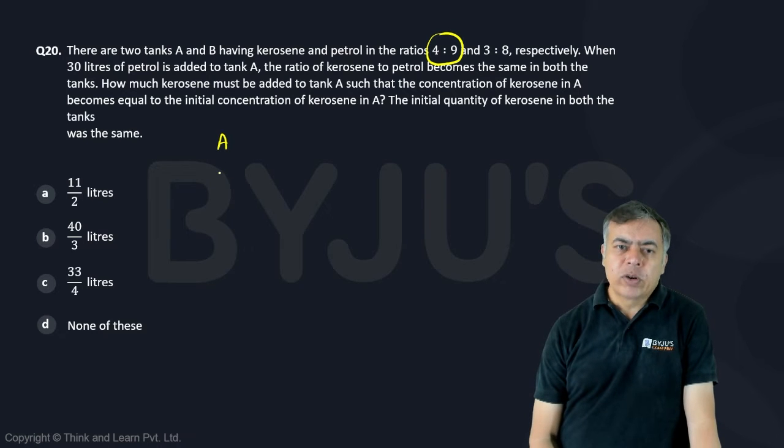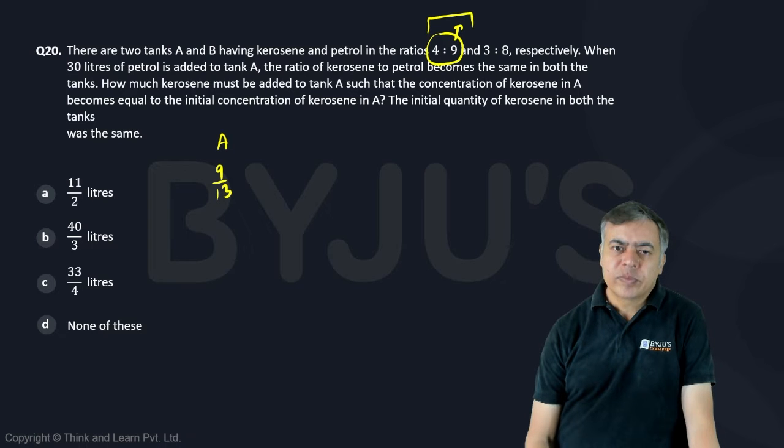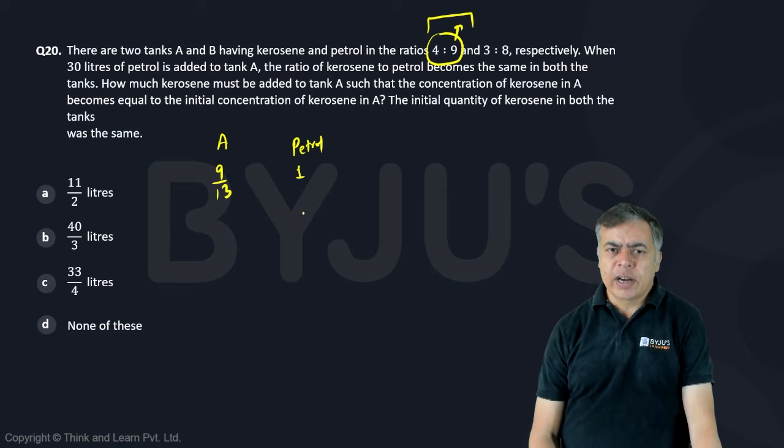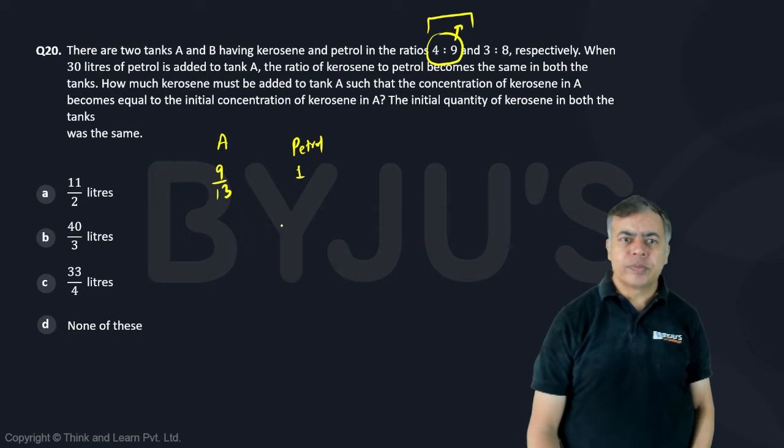So what is petrol? Petrol is 9 out of 13, petrol is 9 out of the total 13. And you are adding here pure petrol, that means you are adding 1 out of 1 petrol. So pure petrol you are adding, so you can write fraction is 1 out of 1.